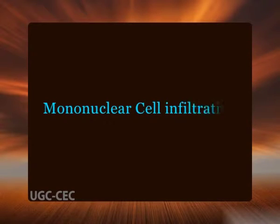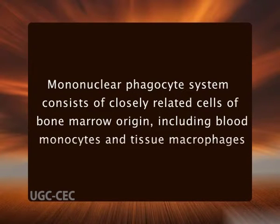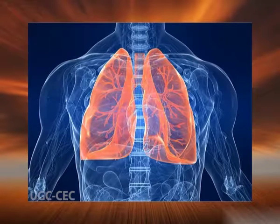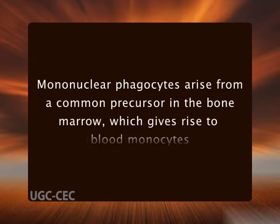The macrophage is the dominant cell in chronic inflammation. The mononuclear phagocyte system consists of closely related cells of bone marrow origin, including blood monocytes and tissue macrophages. The latter are diffusely scattered in connective tissue or located in organs such as the liver, spleen, lymph nodes, and lungs. Mononuclear phagocytes arise from a common precursor in the bone marrow, which gives rise to blood monocytes. Monocytes begin to immigrate into extravascular tissues early in acute inflammation, and within 48 hours they may constitute the predominant cell type.